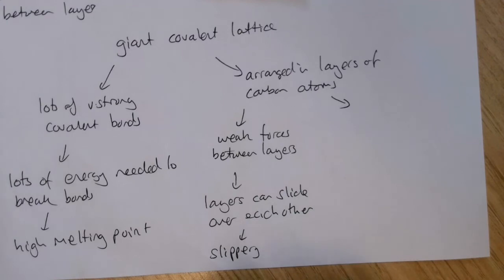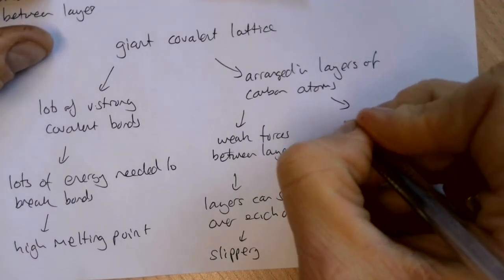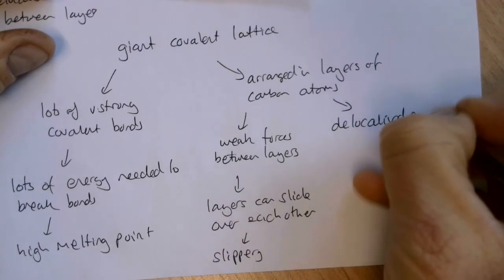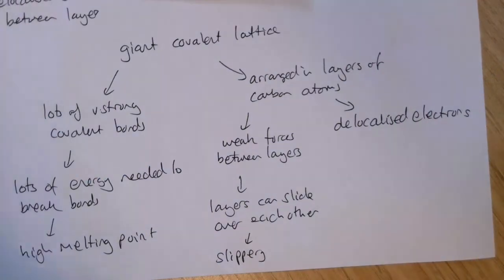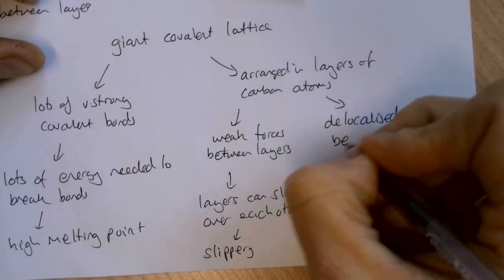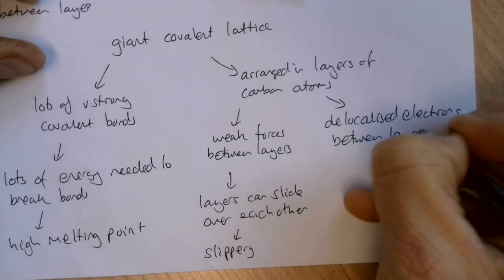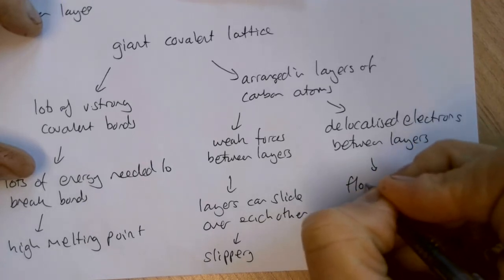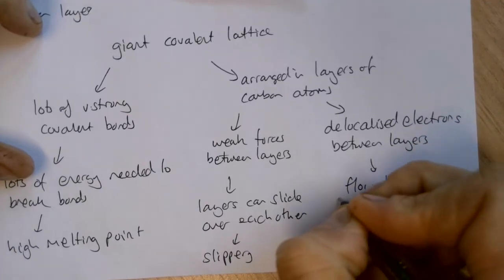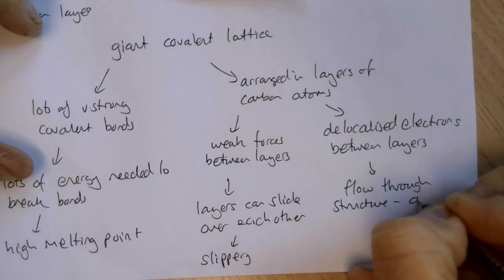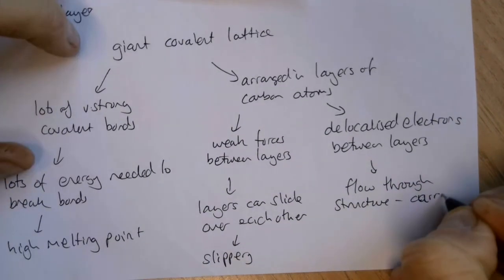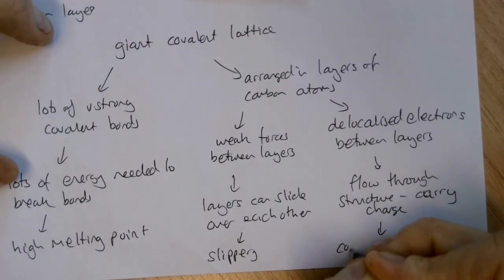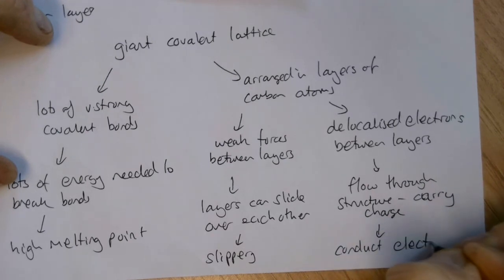Another very important property of graphite is that between the layers there are delocalized electrons — electrons that aren't involved in bonding and aren't stuck to the carbon atoms. These delocalized electrons are able to flow through the structure and carry charge. Because they can carry charge, graphite can conduct electricity.